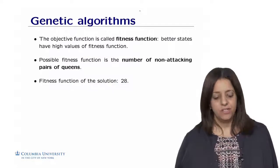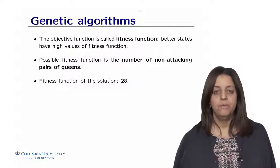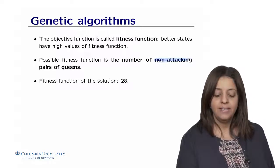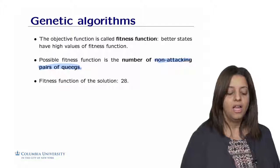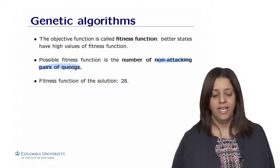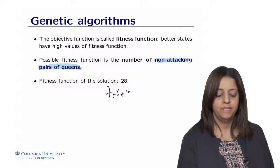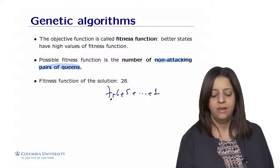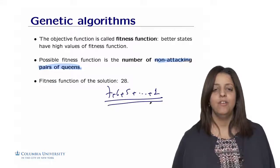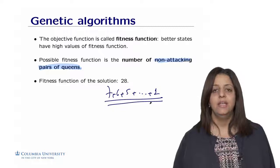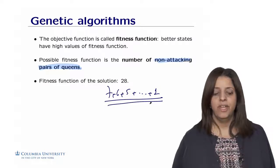A possible fitness function for the eight queen problem could be the number of non-attacking pairs of queens. And for solution, this would represent 28, which is seven plus six plus five plus all the one down to one. So, this would represent the number of non-attacking pairs of queens in a successful board of the eight queen.